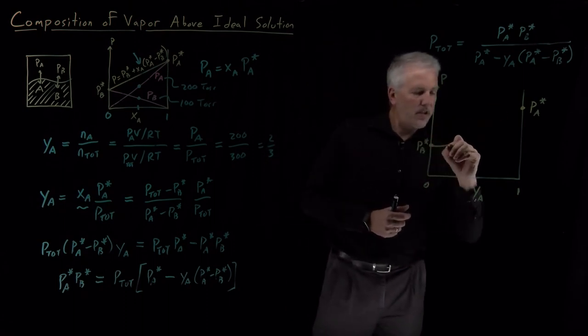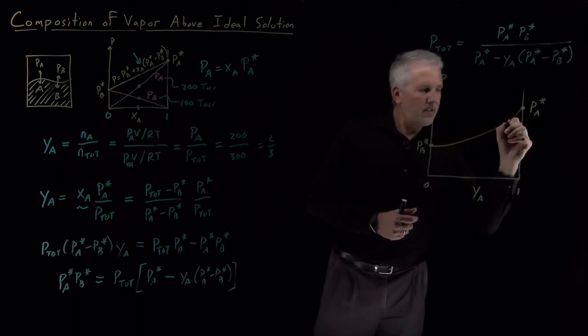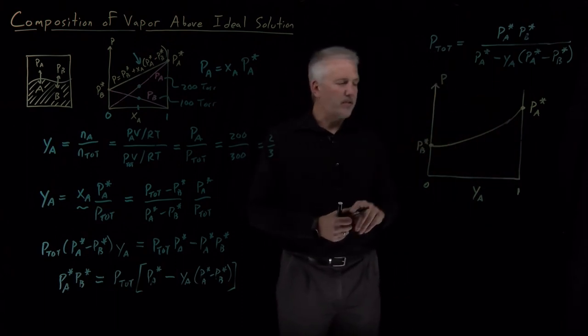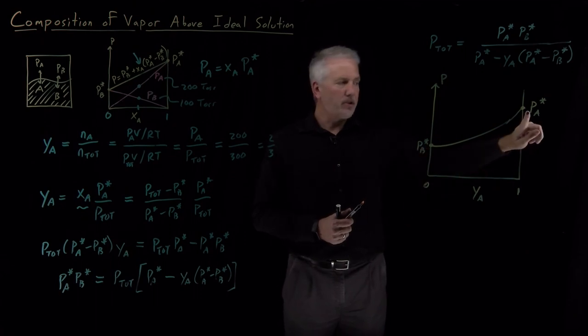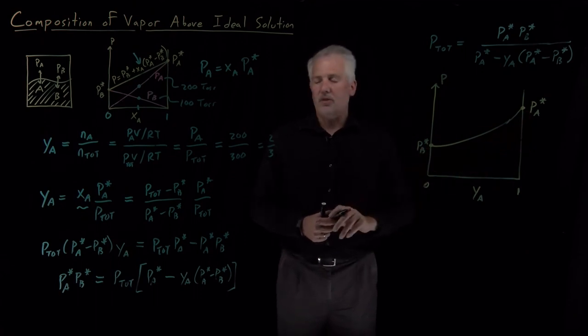If we stared at it a little bit harder, we could convince ourselves that it's actually going to not only not be linear, it's going to dip below linear. So I'll draw this graph as a sagging line of sorts. It still is equal to vapor pressure of B on this side, vapor pressure of A on this side, but it's not a straight line.